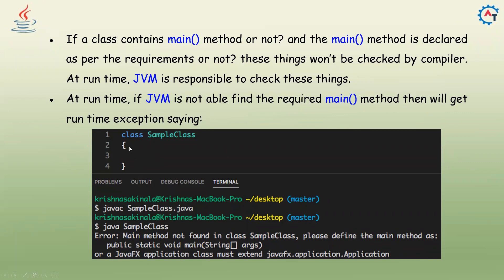Here I created a simple class with no main method inside it. When you compile there is no issue — it's able to compile. But when you run it, you see the error: 'Main method not found in class SampleClass. Please define the main method as public static void main.' So at runtime you will find this issue.